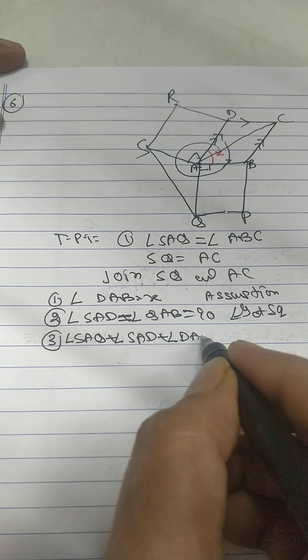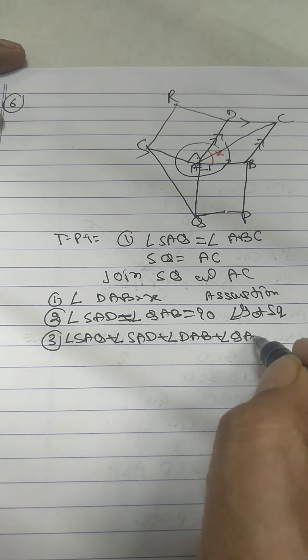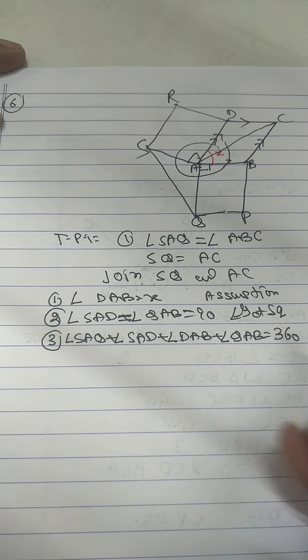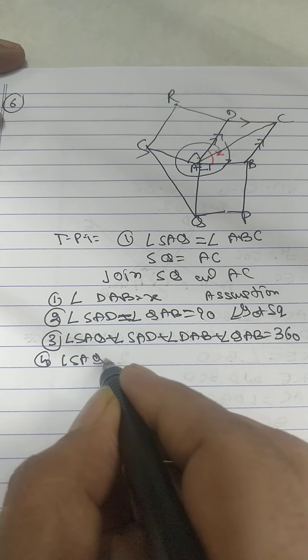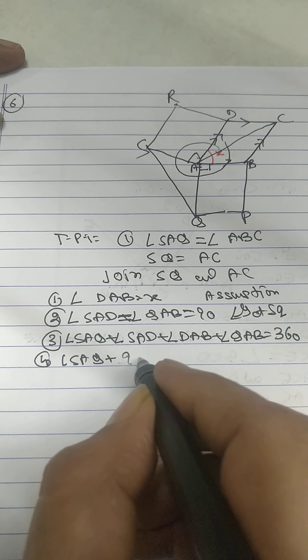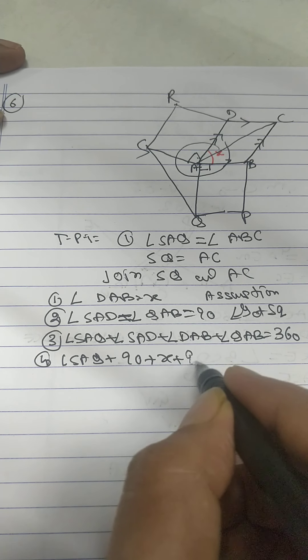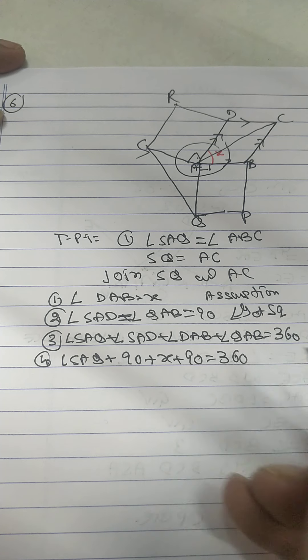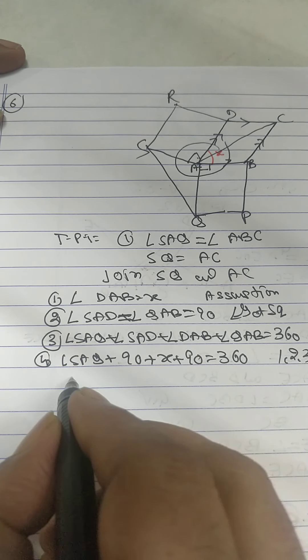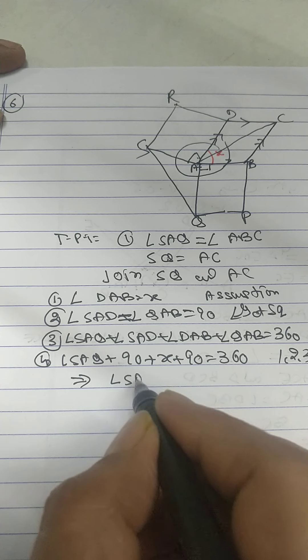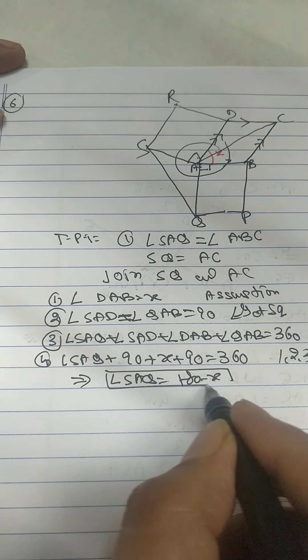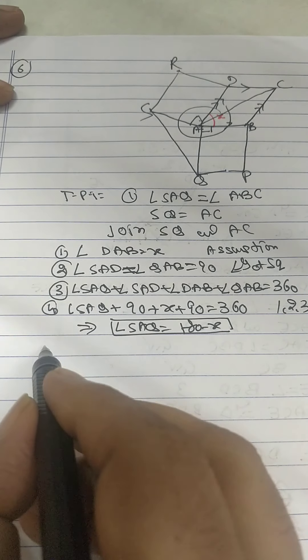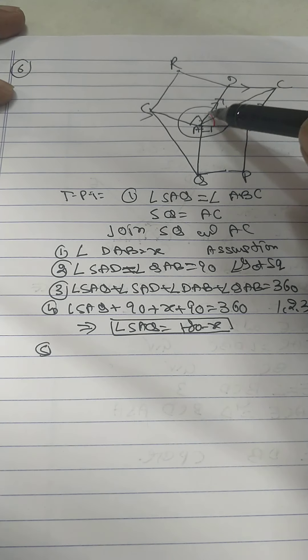Angle SAQ plus SAD plus DAB plus QAB is 360, angle at point. Angle SAQ, SAD we know 90, DAB X, QAB 90, we got from statement 1, 2 and 3. That give me angle SAQ is 180 minus X.